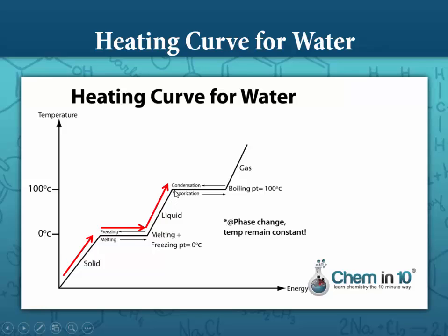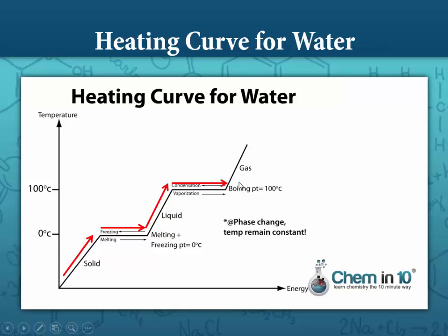Once we reach 100 degrees Celsius, energy is still being added but all that energy is used to vaporize the liquid water — to overcome the attractive forces between the liquid water molecules and separate them into the gaseous state. Once all the liquid water molecules become gaseous and energy is still being added, the temperature of the gas will continue to rise.